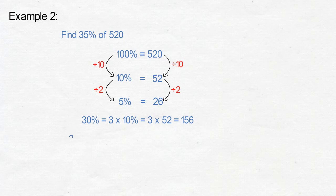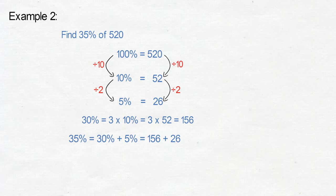Thirty-five percent equals thirty percent plus five percent, which equals one hundred and fifty-six plus twenty-six. Thirty-five percent of five hundred and twenty equals one hundred and eighty-two.